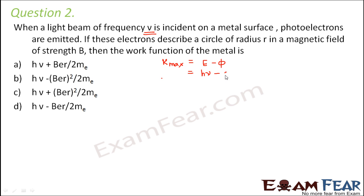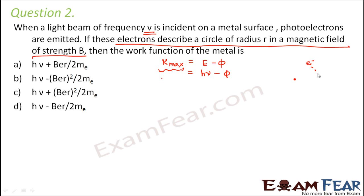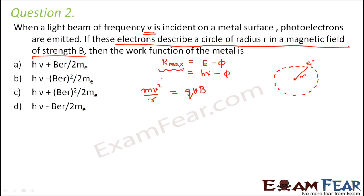The energy of incident radiation is hν, so KE_max = hν − φ. Our next challenge is finding KE_max. The electrons move in a circular path of radius r in magnetic field B. The centripetal force mv²/r equals the magnetic force qvB.